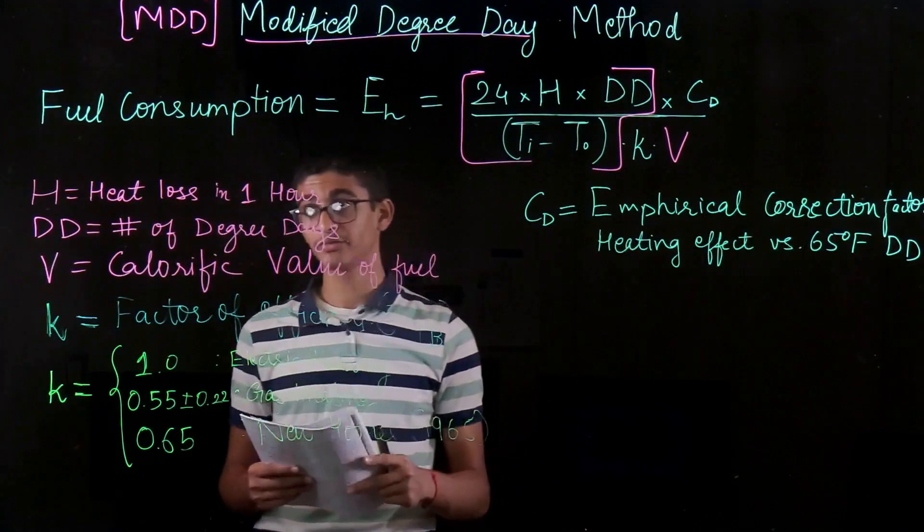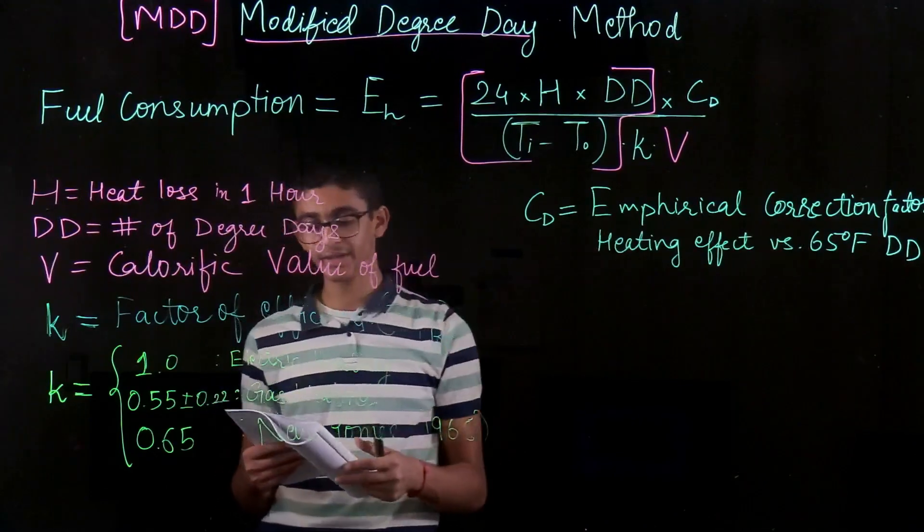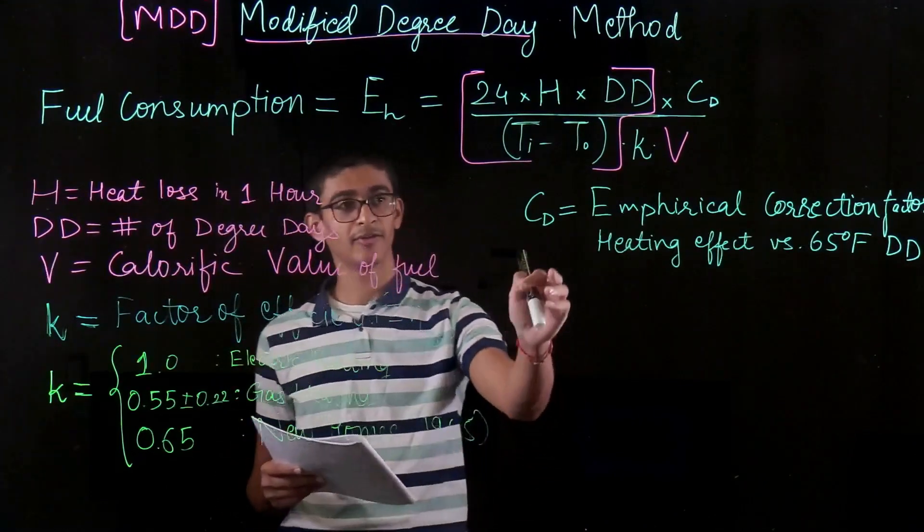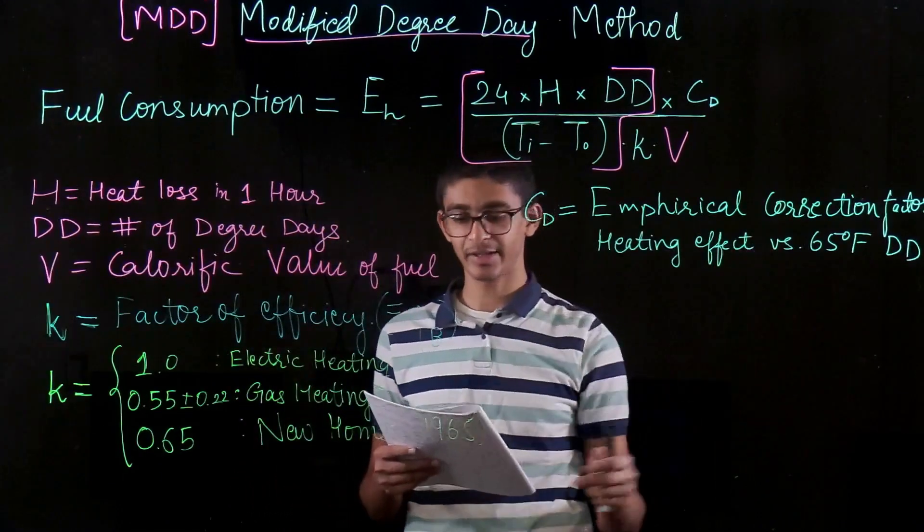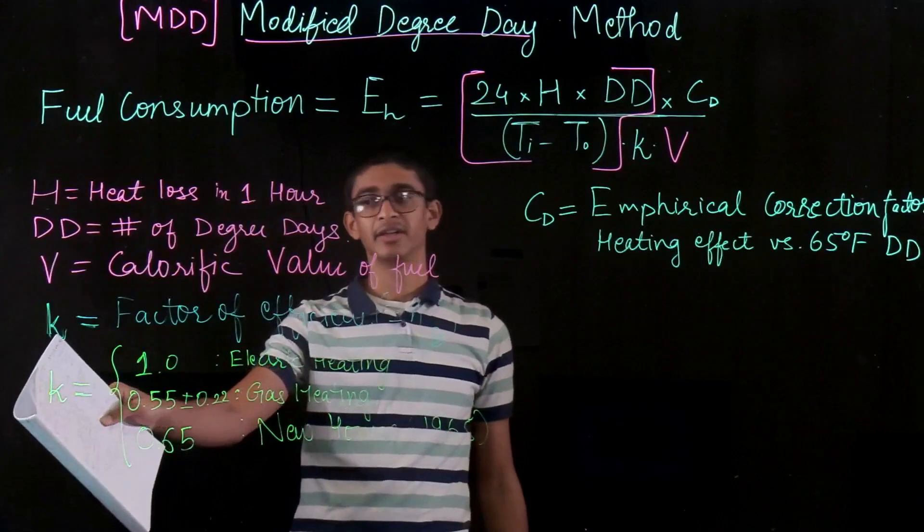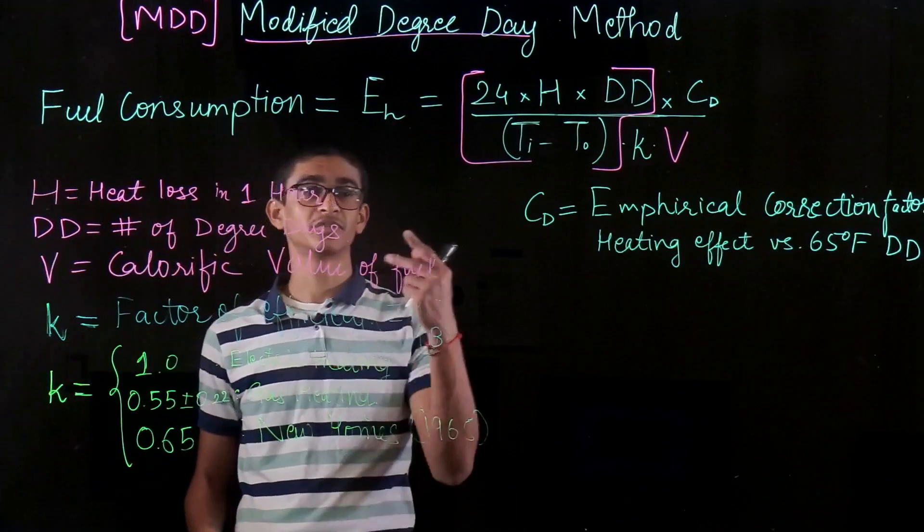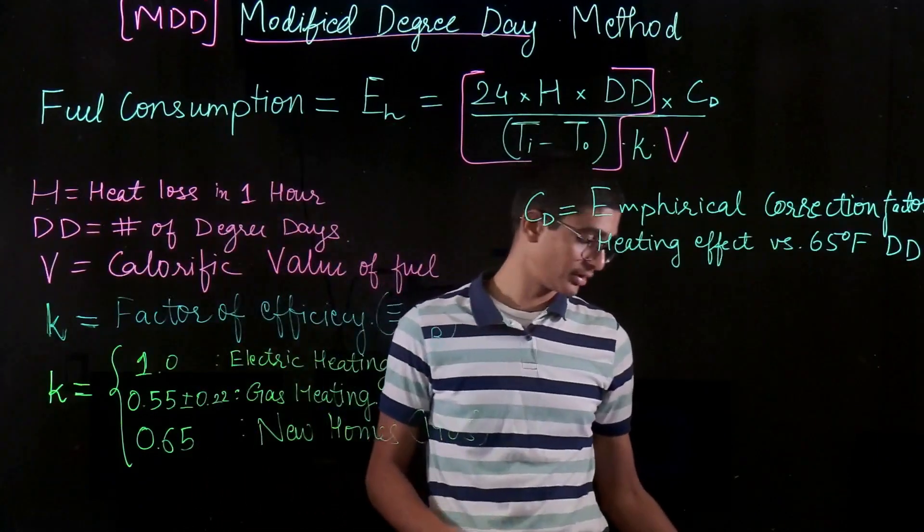So one of the advantages is it is better than the basic degree day method as it takes into account the correction of base or the balanced temperature variation. And it also takes into account the change in the efficiency of the fuel which is burned in the process to heat our homes. So these are the two advantages.